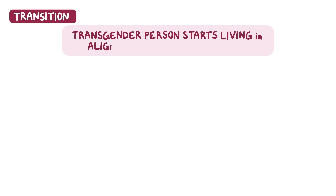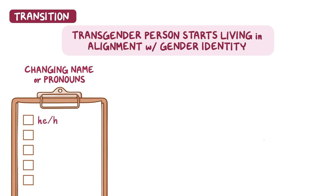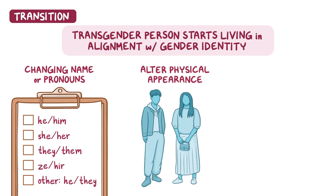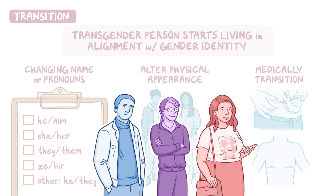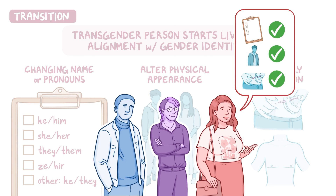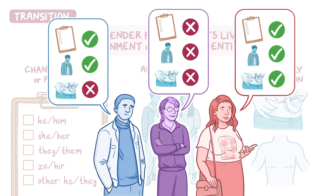Transitioning is a process when a transgender person starts living in alignment with their gender identity instead of their sex assigned at birth. This process is unique for every person and may involve changing their name or pronouns, which may be he/him, she/her, they/them, ze/hir, or even mixed pronouns like he/they. They also may begin altering their physical appearance or medically transitioning through hormone or surgical interventions. Each person affirms their gender identity in a way that feels right for them, and they may choose to pursue all, some, or none of these interventions to support their gender transition.